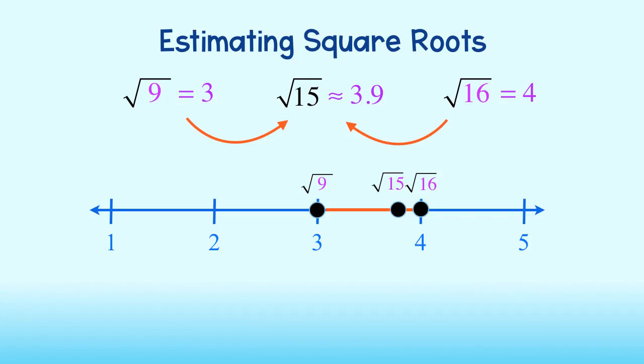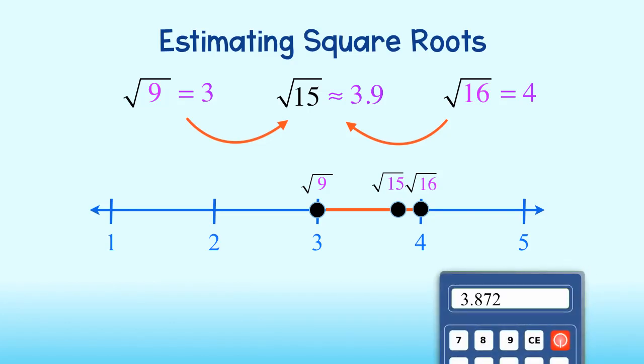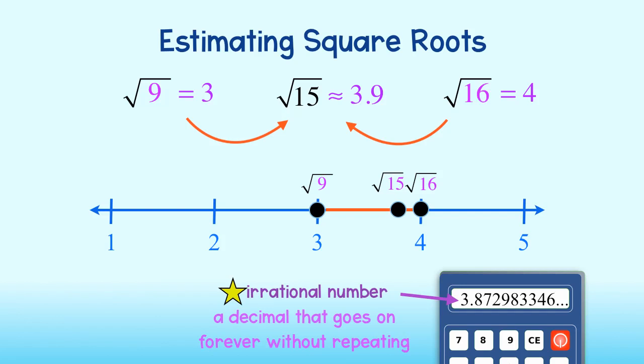Now, I will plug it into my calculator to see the actual square root. You will see that the square root of 15 is an irrational number. It goes on forever without repeating. If I round this number to the nearest tenth, I will get 3.9. Not a bad estimate.